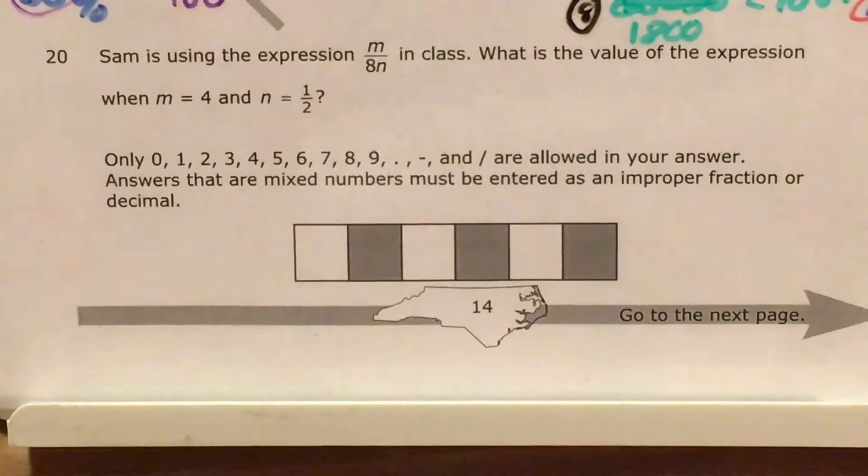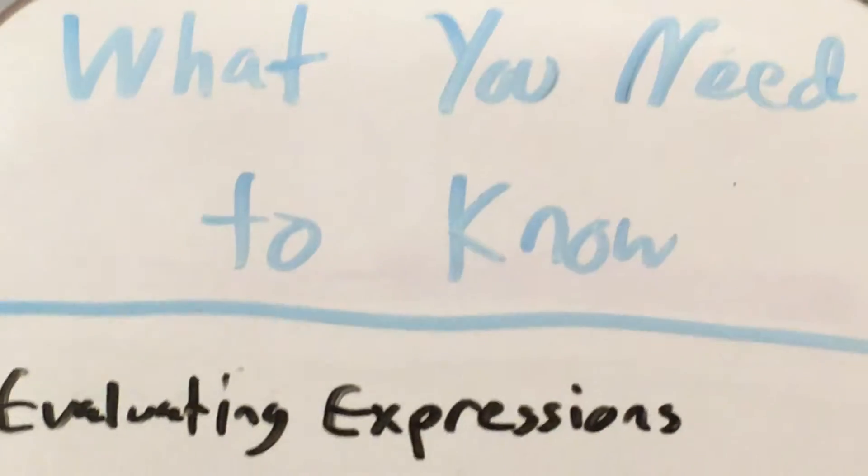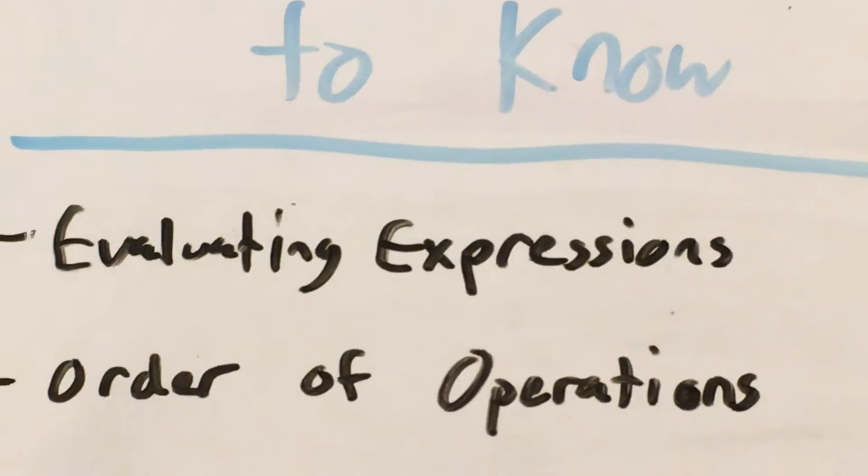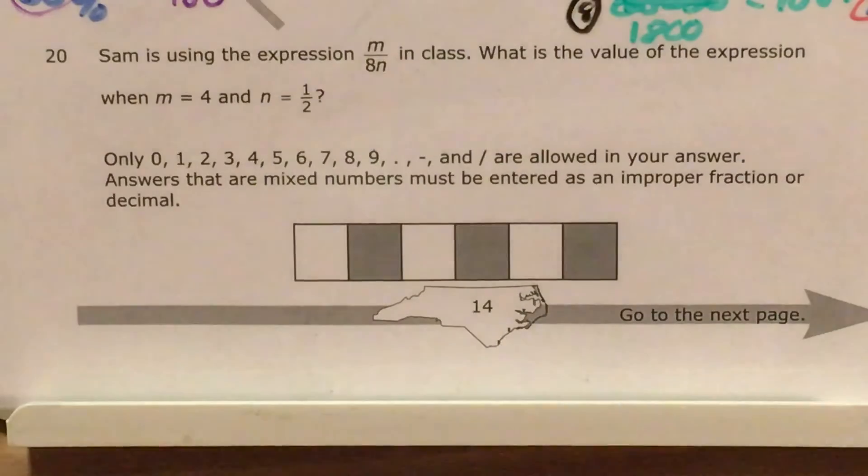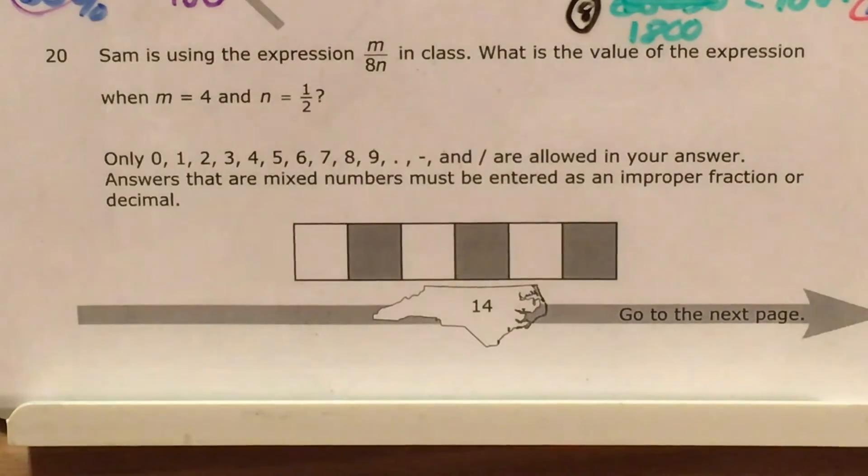So in order to do really well on a question like this, we'll need to know how to evaluate expressions and also how to use order of operations to figure out the exact number value of an expression with multiple steps. So let's go ahead and get started.